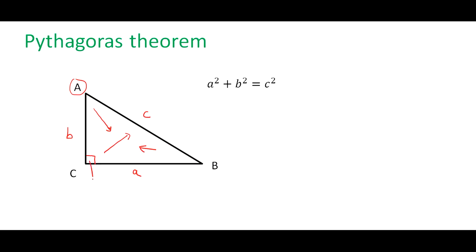So this angle here we know is 90 degrees. We apply Pythagoras' Theorem on triangles that have a 90 degree angle in them. A triangle with an angle that is 90 degrees is called a right angled triangle. The formula that we need to remember is A squared plus B squared is equal to C squared, and this is essentially Pythagoras' Theorem.